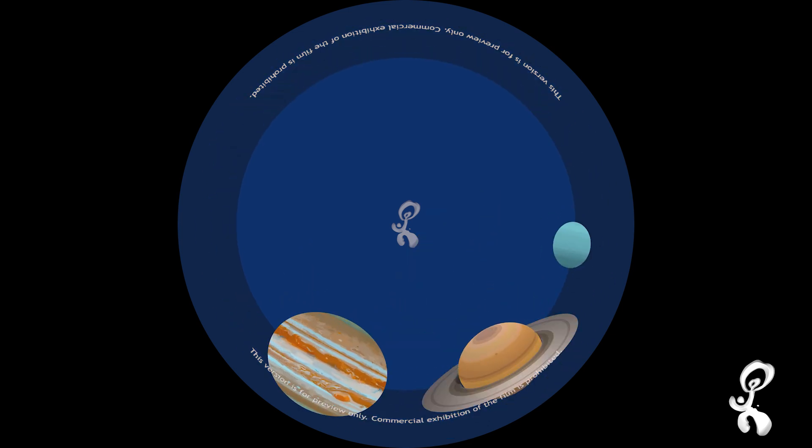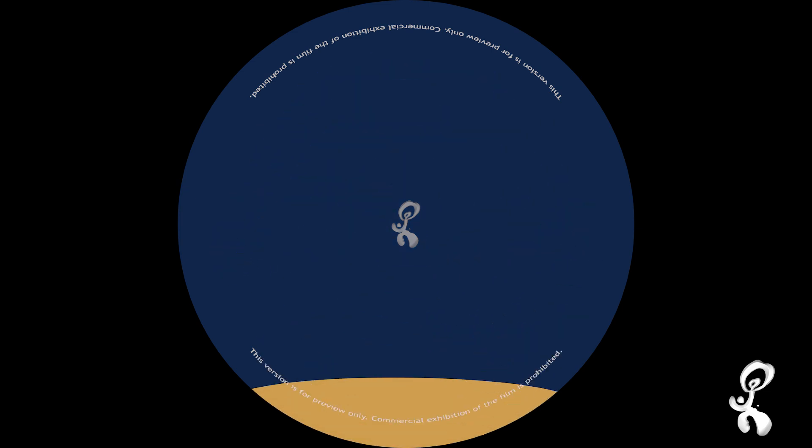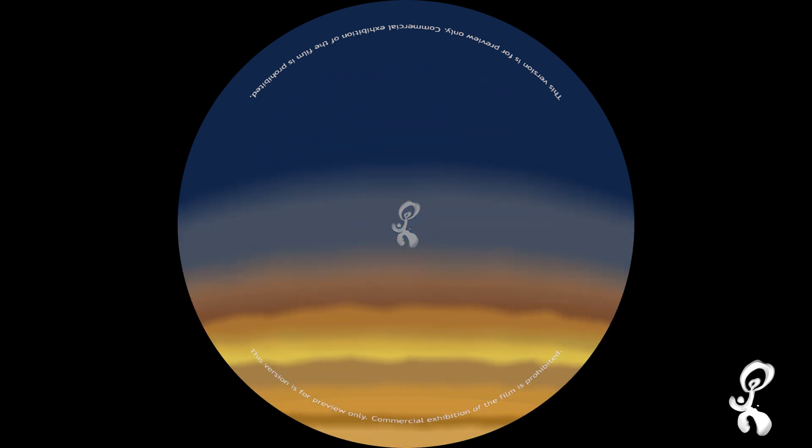Jupiter, Saturn, Uranus and Neptune on the other hand are gas giants. No, not because they fart. They are called gas giants because they are surrounded by lots and lots of gases.